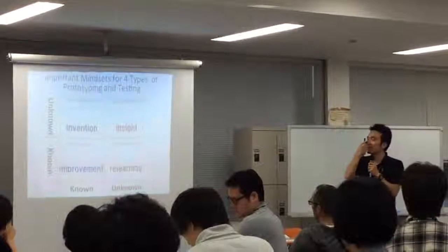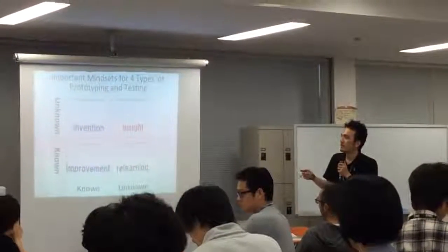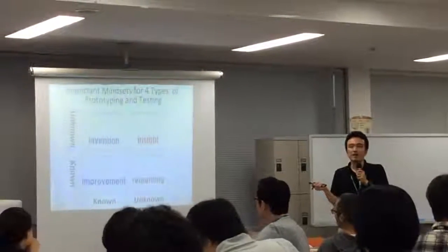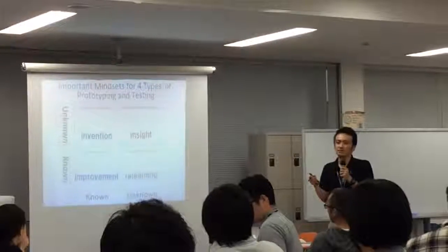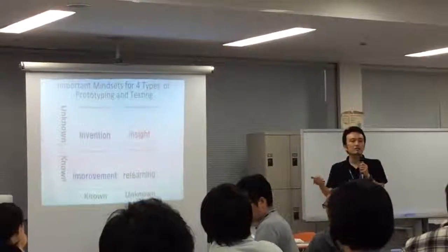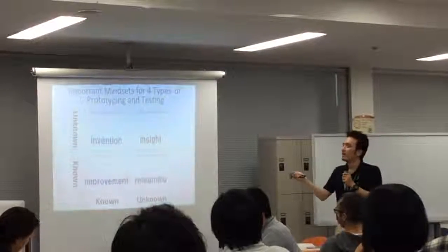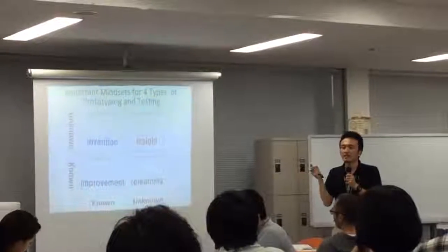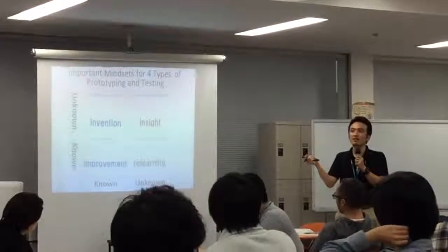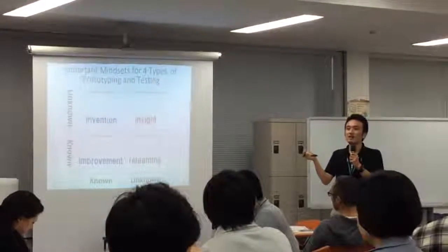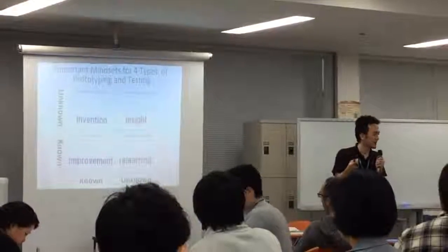There are four types of prototyping with different key mindsets. Here is improvement — you're dealing with known knowns. Here is invention — you're trying to invent something to tackle your known unknown. Here you need an insight, an 'aha' moment: I never knew that, I learned that, I found my blind spot.